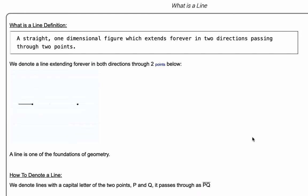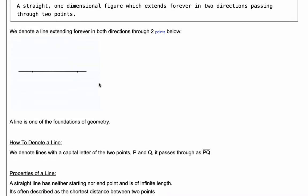First, a line is a straight one-dimensional figure which extends forever in two directions and it passes through two points. So check out this little visual here. We've got point P, point Q. These arrows mean that the line continues forever in this direction and this direction.